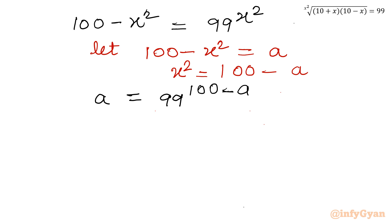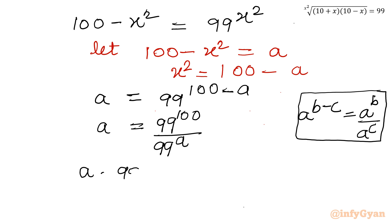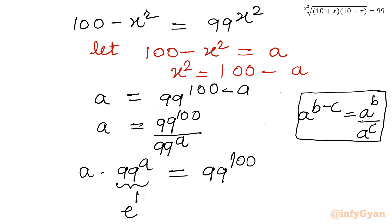Now the property of exponents will come: a power (b minus c) can be written as a power b divided by a power c. Using this exponent law, I can write the RHS as 99 to the power 100 divided by 99 to the power a. Cross multiplying on the left hand side, I write a times 99 to the power a equals 99 to the power 100.